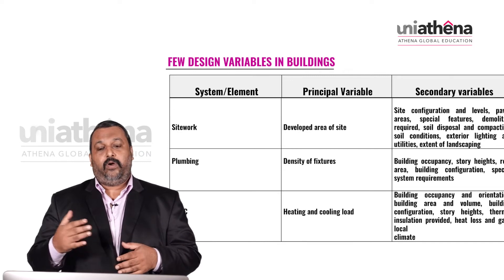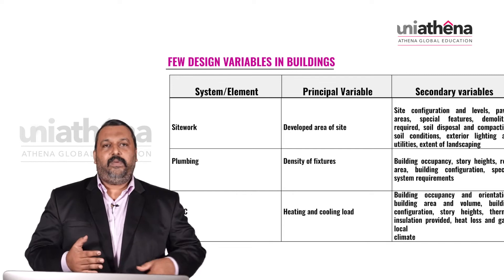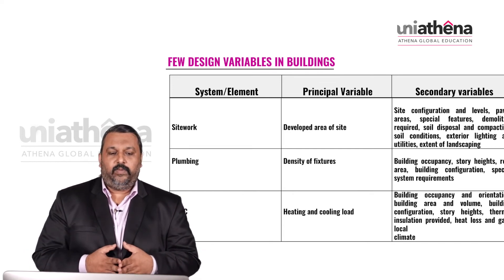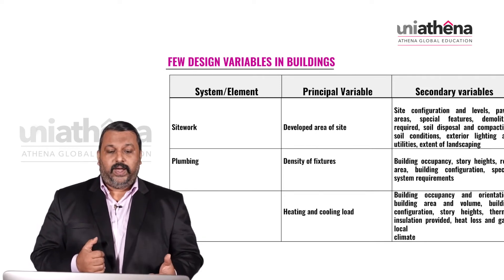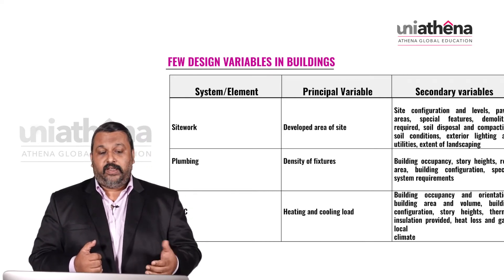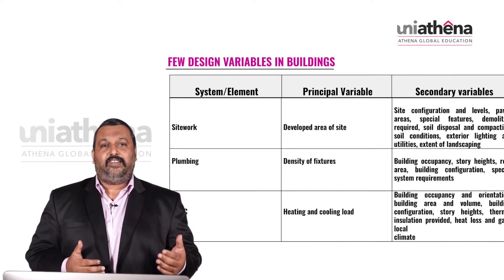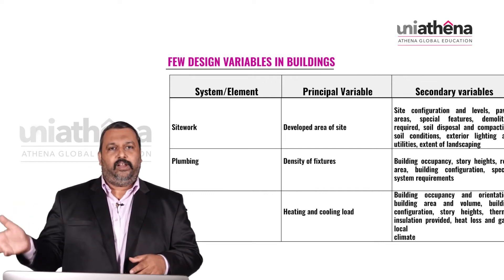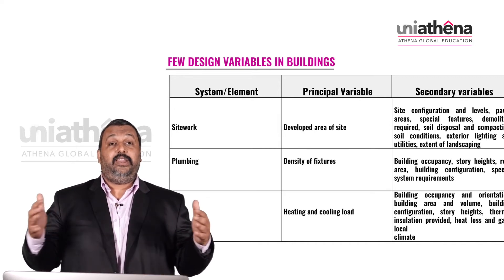For site work as a system or element, the principal variable is the developed area of the site. Secondary variables include site configurations and levels, paved areas, special features required, demolitions if any, soil disposal and compaction, soil conditions, exterior lighting, utilities, and extent of landscaping.